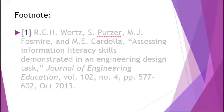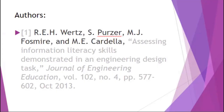The first part of the citation is the footnote — that is the number that corresponds to where it was used within your text as an in-text citation. So if there is number one somewhere in your text, this is what it is attributed to, making it the first citation in your paper. The next part is the authors. In IEEE format, you cite the authors with their first initials followed by their full last name — for example, R. E. H. Wurtz. If there is more than one author, you put a comma and then the next author, such as S. Perser, followed by a comma, and so on.